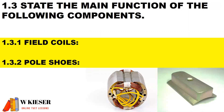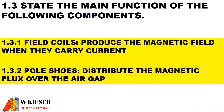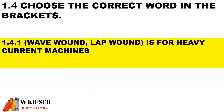State the main function of the following components. The main function of the field coil is to produce the magnetic field when they carry current. The pole shoes is to distribute the magnetic flux over the air gap.